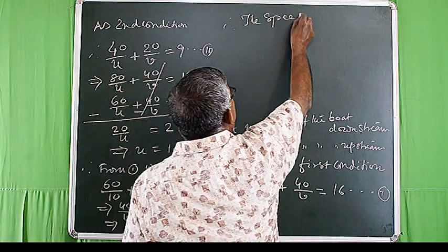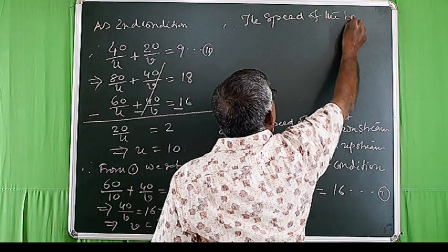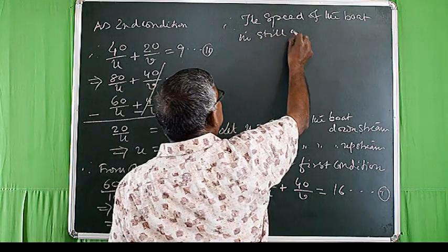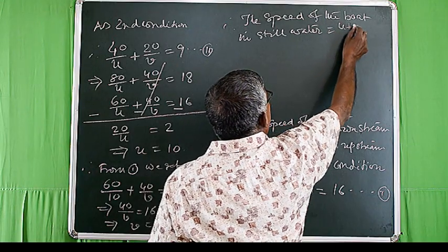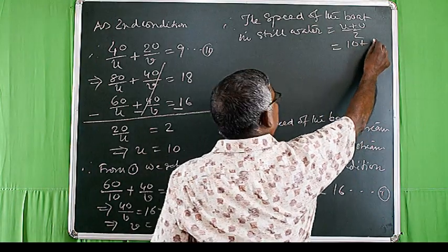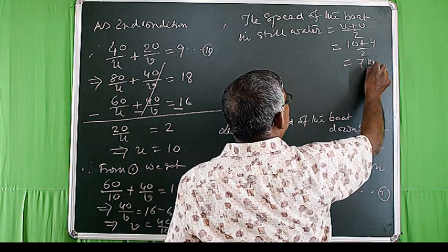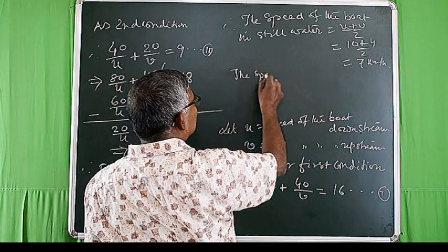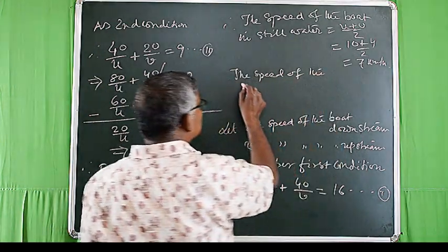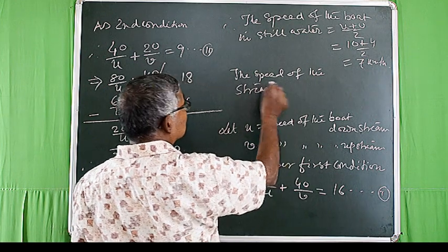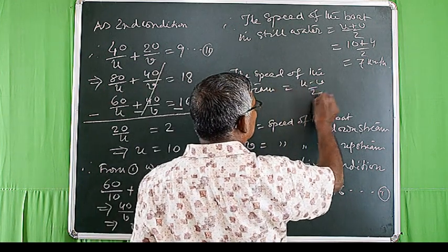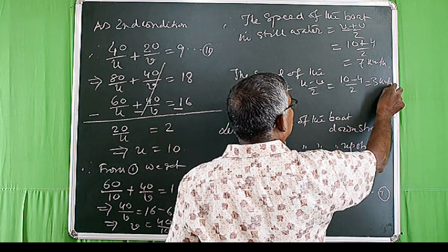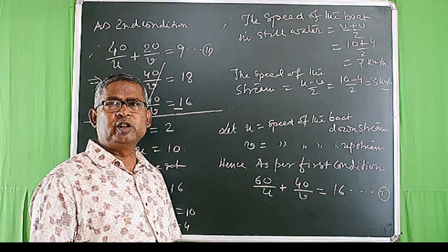Therefore the speed of the boat in still water = (u + v) / 2 = (10 + 4) / 2 = 7 kilometer per hour. And the speed of the stream = (u - v) / 2 = (10 - 4) / 2 = 3 kilometer per hour.